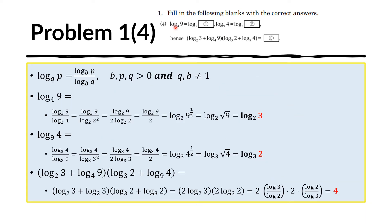For the fourth question, we need to convert the expression log of 9 base 4 into a log base 2, log of 4 base 9 into a log base 3, and then simplify the combined expression. To do this, we recall the change of base identity: the log of P base Q equals log of P over log of Q, where both are expressed in an intermediate base B. The restrictions are that B, P, and Q must be positive, and Q and B should not be 1.